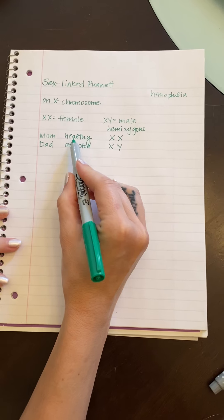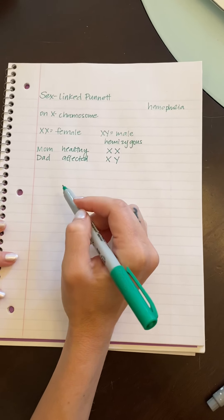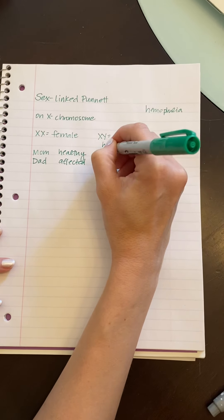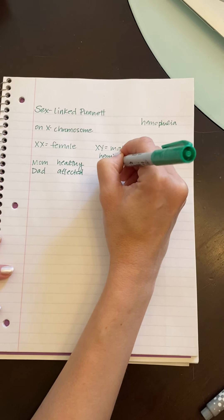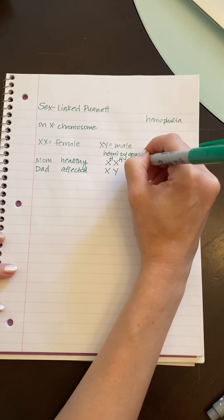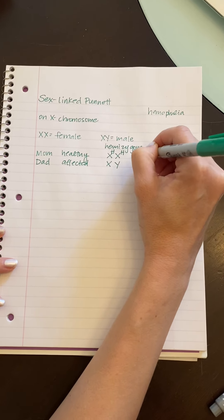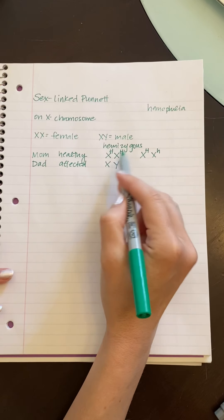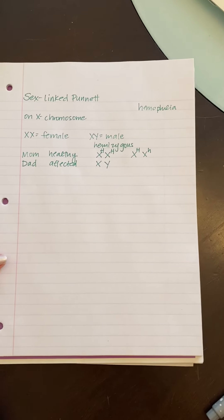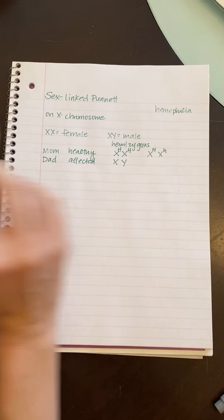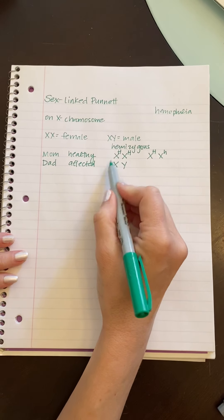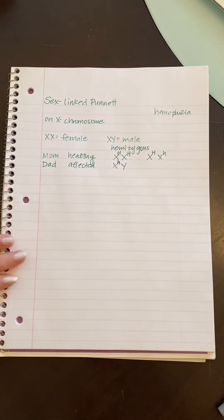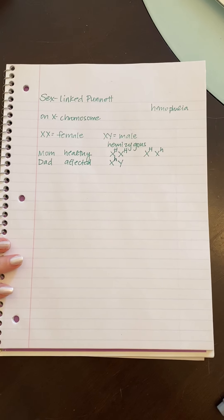If mom is healthy, that means she has to have at least one dominant allele. So she could have two dominant alleles or she could have just one be what we call a carrier. Both of these would result in her being healthy. Dad has hemophilia. So his one X has to have the recessive H because he has the actual disease.